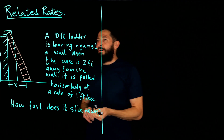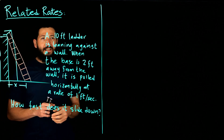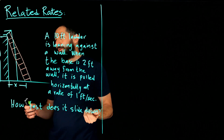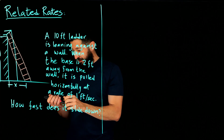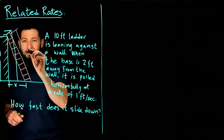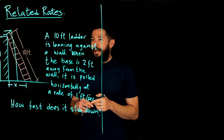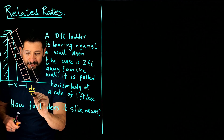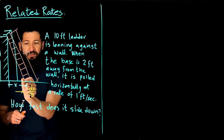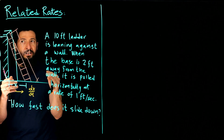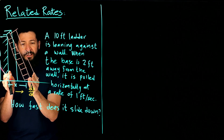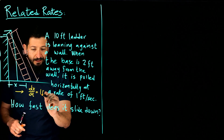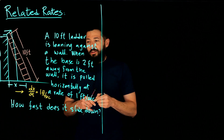Now let's solve an applied problem. This is a typical related rates problem: a ladder leaning against a wall that's being pulled away. It's a 10-foot ladder, so the length from the base to the top is 10 feet. The ladder is being pulled away, so dx/dt is positive — the distance from the wall is growing. They tell us this rate is 1 foot per second.